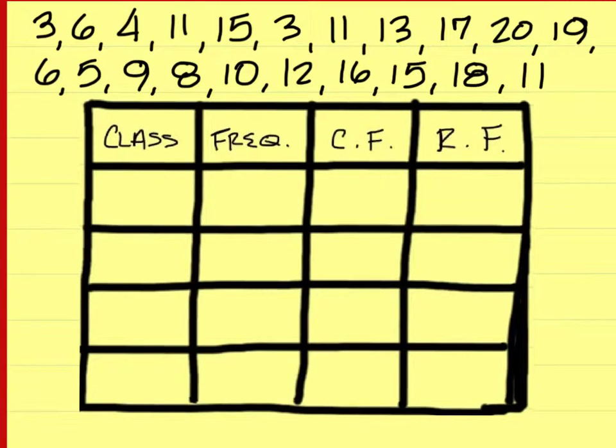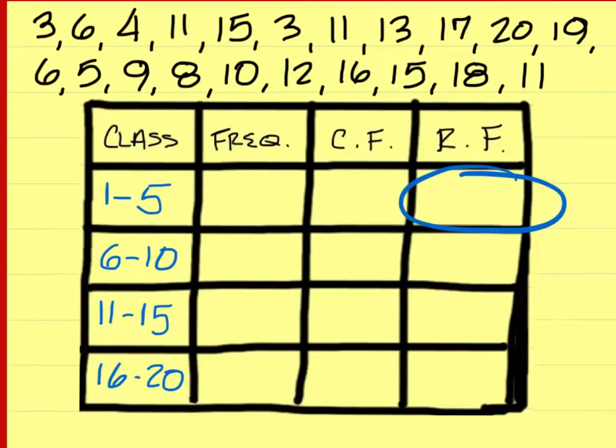On this problem, all we're looking for is the relative frequency of this one, that's it. Okay, we need to find how many numbers are from one to five, and we have one, two, three, and four. That's it, yeah, so there's four. How many numbers are there all together? All right, so there are twenty-one numbers total. Four divided by twenty-one is going to turn out to be nineteen, and when you round to the nearest percent, it is nineteen percent.